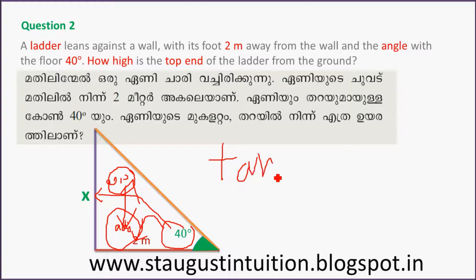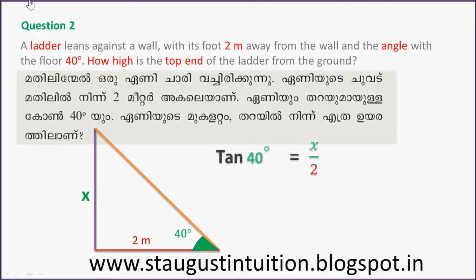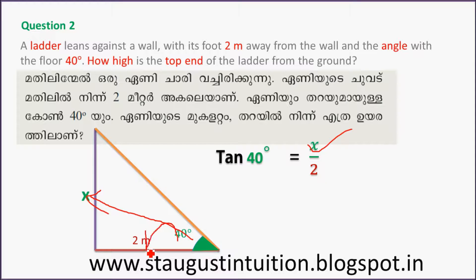What is tan? Tan is opposite side divided by adjacent. Tan 40 is equal to opposite side x, and the adjacent side is 2 meters.